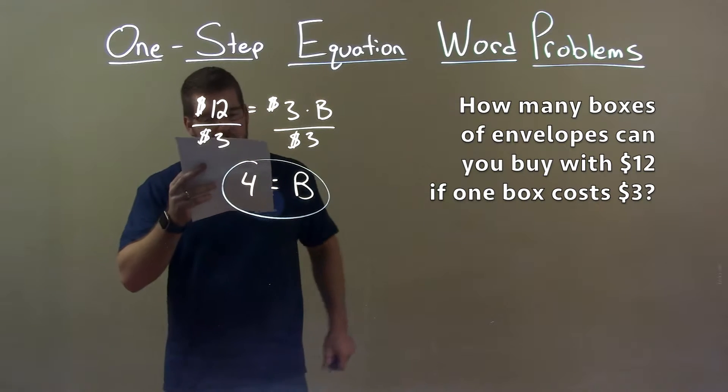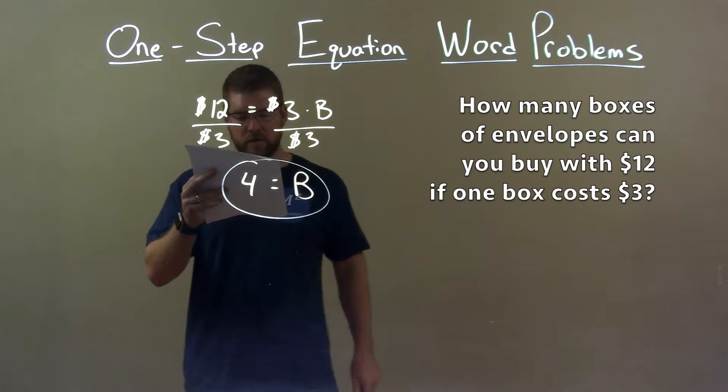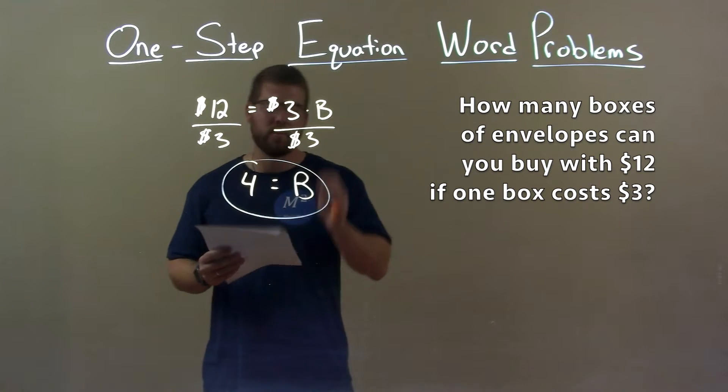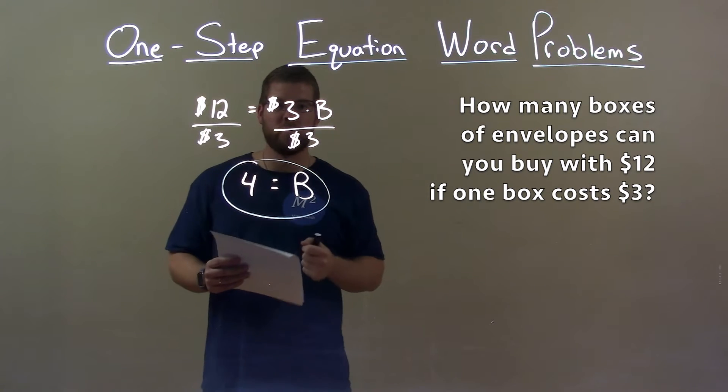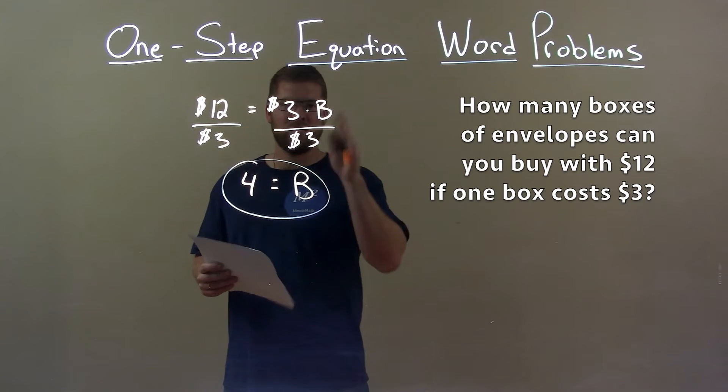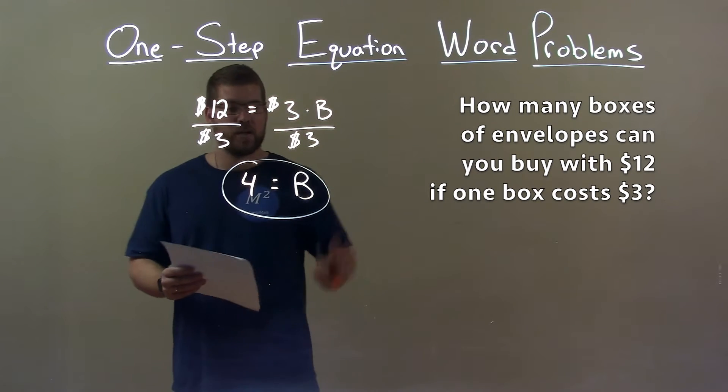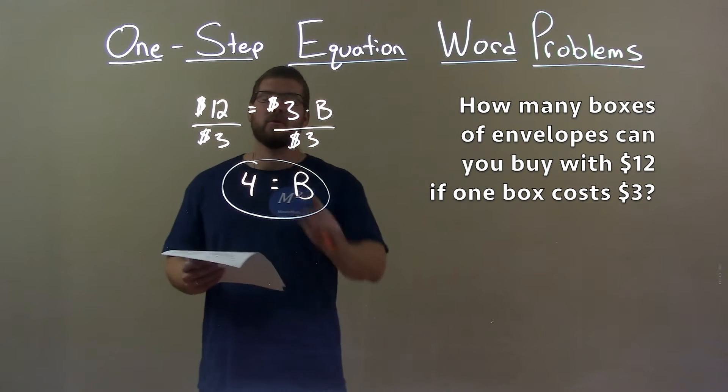Quick recap, we're given how many boxes of envelopes can you buy with $12 if one box costs $3. With that information, I created an equation. $12 equals $3 times B, and then I solved for B. Divided 3 to both sides, giving B by itself, so we can buy a total of 4 boxes of envelopes for $12.